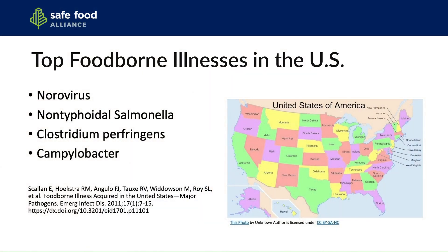The top foodborne illnesses that we face in the United States include norovirus, which you may be familiar with from incidents in which cruise ships left port and came back with many passengers ill — it's a very infectious illness. Non-typhoidal salmonella, so salmonella beyond the type we talked about with Typhoid Mary, Clostridium perfringens, again a toxin-based illness, and Campylobacter.